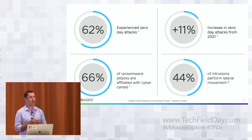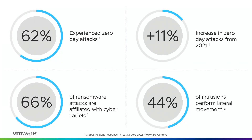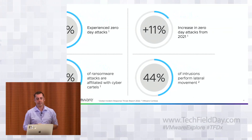Let's focus on what organizations are seeing in the real world, from the VMware Threat Intelligence Report and from Contexa, our Threat Intelligence team. About 62% of organizations surveyed experienced zero-day attacks. Most importantly, 44% — almost half — of attacks involve some form of lateral movement, pivoting beyond the initial target into more valuable resources on the internal network. This illustrates the importance of east-west visibility and network segmentation to scope the attack surface and reduce the blast radius.